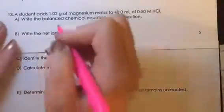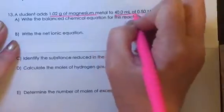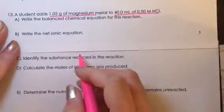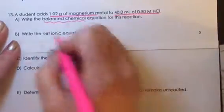All right, for number 13, a student adds 1.02 grams of magnesium to hydrochloric acid. The first part of the question asks us to write the balanced chemical equation.